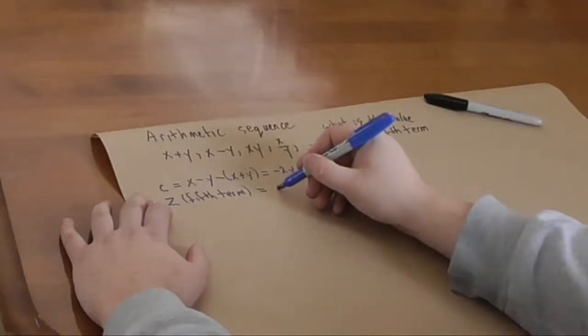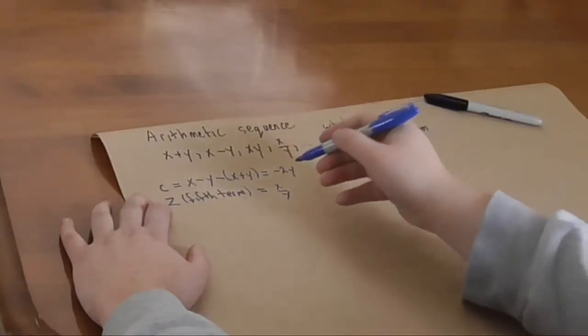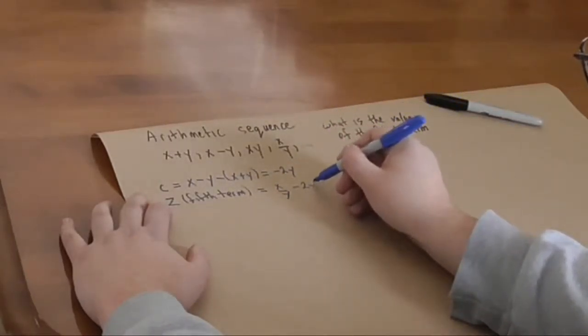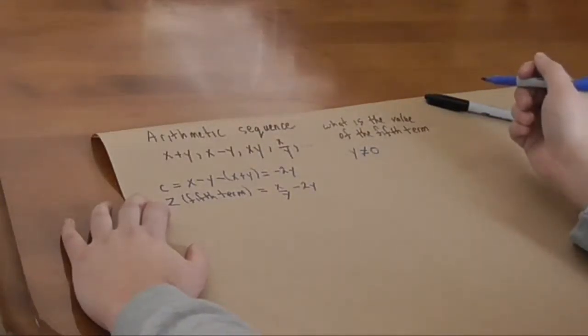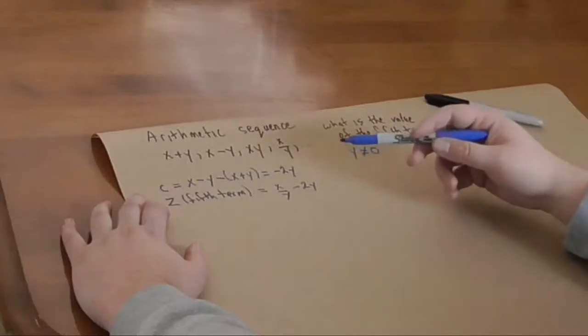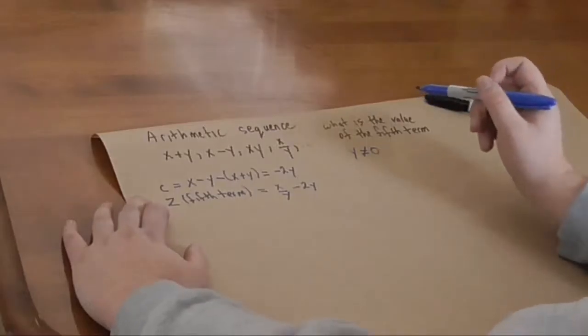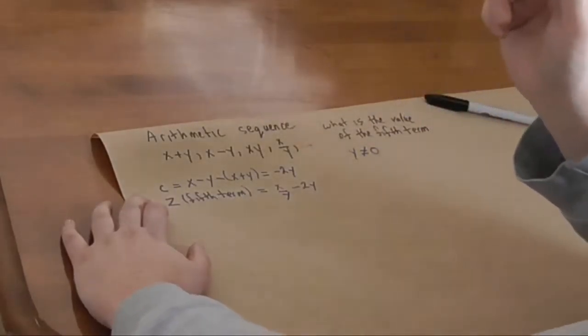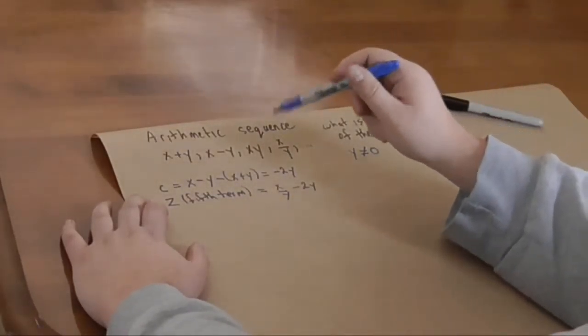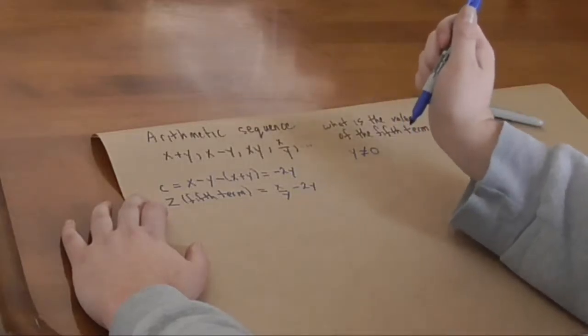And that's equal to the fourth term, x over y minus two y. We don't need that just yet. We'll need that when we need to calculate the final value for z. What we need to do beforehand is we need to figure out what x and y are.